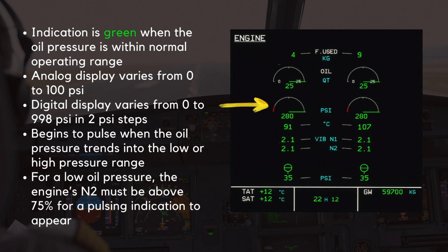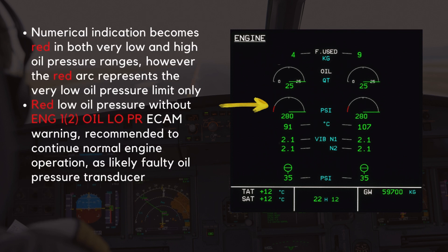The oil pressure indication is green when the oil pressure is within normal operating range. The analog display varies from 0 to 100 PSI. The digital display varies from 0 to 998 PSI in 2 PSI steps. It begins to pulse when the oil pressure trends into the low or high pressure range. For a low oil pressure, the engine's N2 must be above 75% for a pulsing indication to appear. The numerical indication becomes red in both very low and high oil pressure ranges. However, the red arc represents the very low oil pressure limit only.